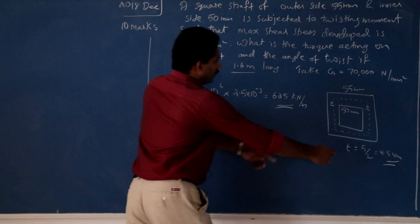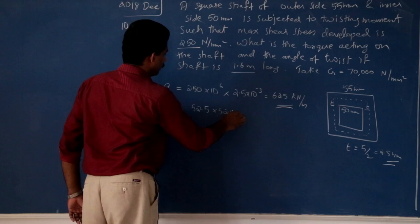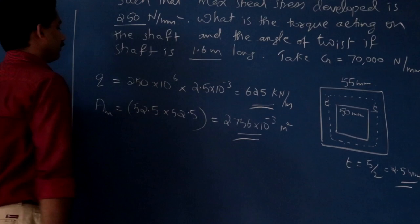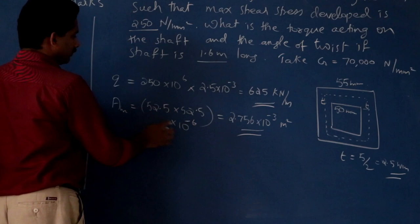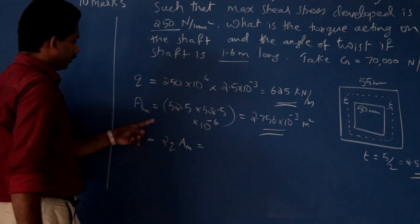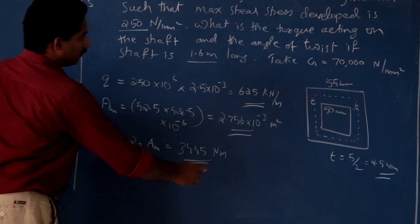50 plus half thickness plus half thickness — that is 50 plus thickness. So, it is 50 plus 2.5, giving the mean side as 52.5 mm. It will become 2.756 into 10 raised to minus 3 meter squared. So, torque T equals 2q into Am — I will get 3445 newton-meter.